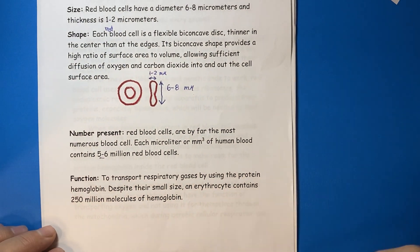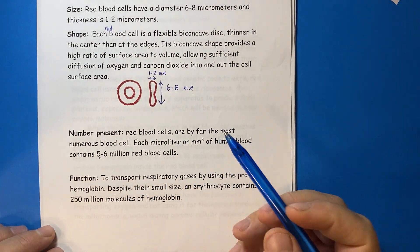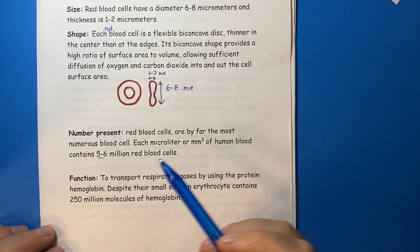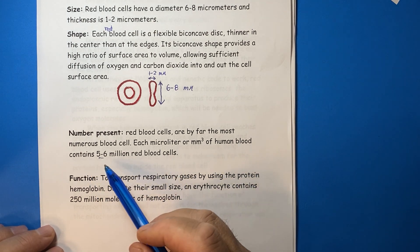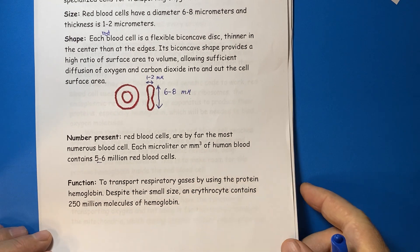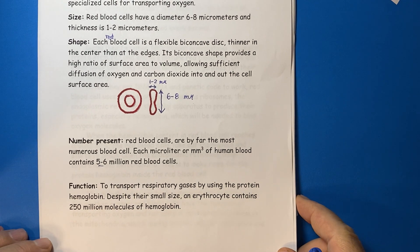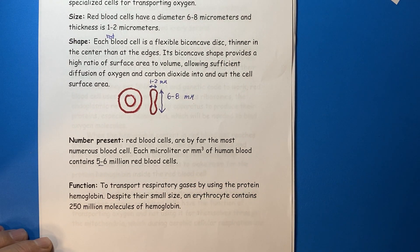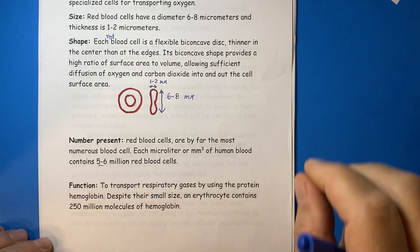Number present: each microliter of human blood contains around 5 to 6 million red blood cells. Function: to transport respiratory gases by using the protein hemoglobin.